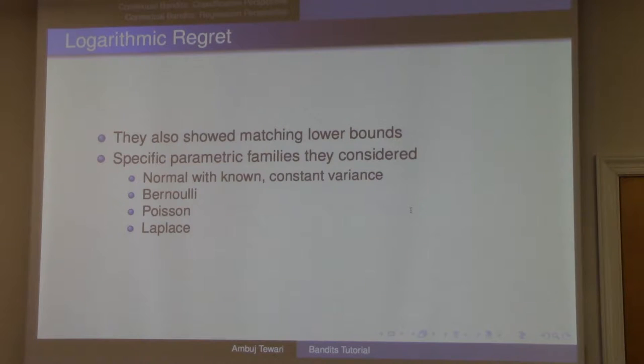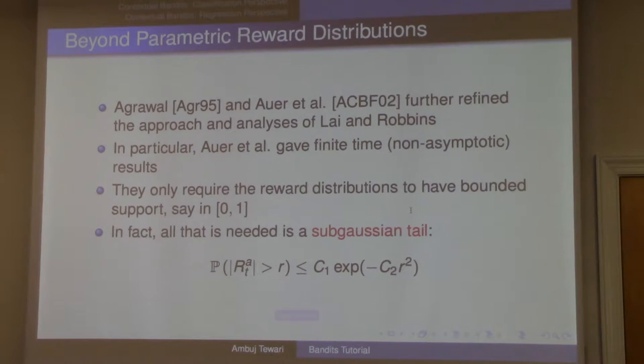So μ* is the highest mean. Here I'm summing over all suboptimal arms. I only compute the sum over suboptimal arms, and then I look at the difference—how bad is μₐ compared to μ*—and I divide it by the KL divergence, the Kullback-Leibler divergence or the relative entropy between these two distributions.